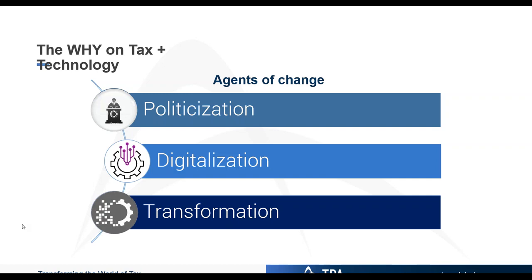Tax managers will need to defend themselves against authorities who interpret data negatively. The third agent of change is transformation — really about people. Tax professionals going forward will need better technical awareness, more digital skills, and varying degrees of tax data literacy depending on their role. It also means graduating your mindset from pure enterprise process automation to people, process, and technology.